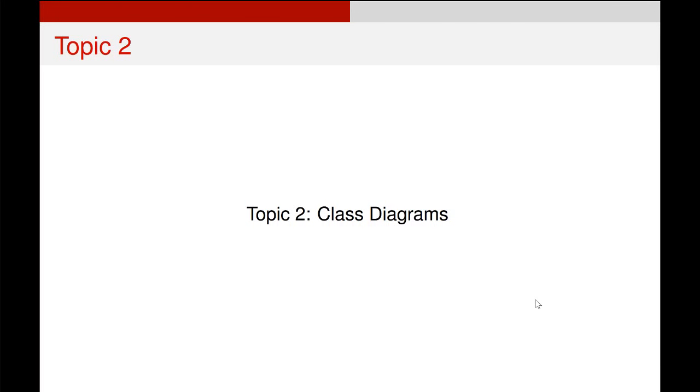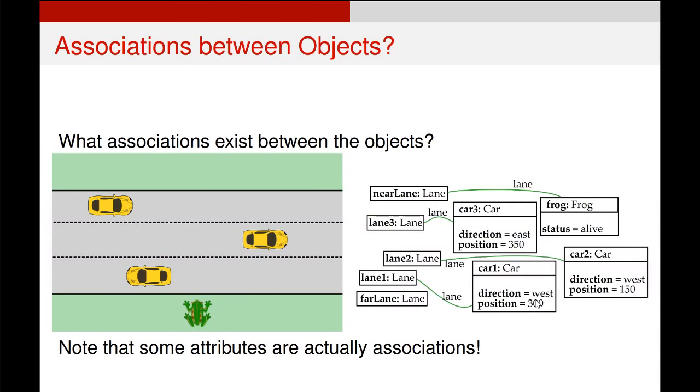Okay, now we're going to look at how we create a class diagram from a simple example. Hopefully you'll remember that we just had this object diagram showing three different objects from a Frogger game and the relationships between them.